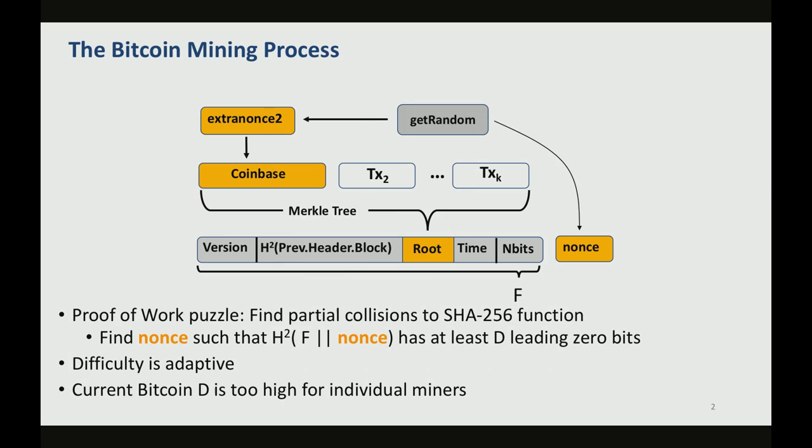It turns out that this difficulty is adaptive, so the Bitcoin network is constantly updating this difficulty in order to keep the rate of newly created coins constant.